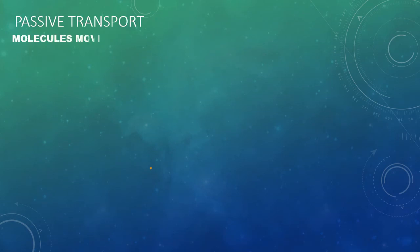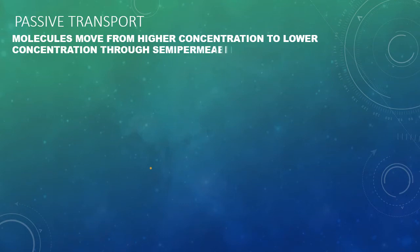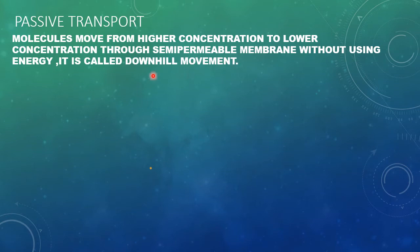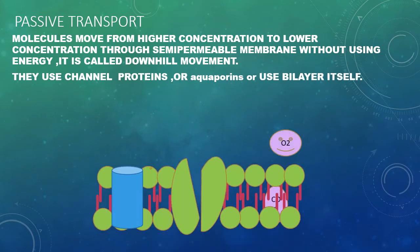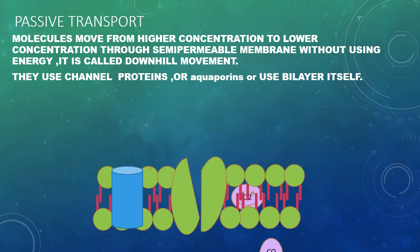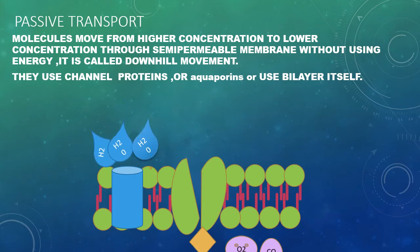In passive transport, molecules move from higher concentration to lower concentration through the semi-permeable membrane — this movement is called downhill movement. Channels, aquaporins, and the bilayer itself are used. Oxygen and carbon dioxide, being uncharged molecules, pass through the bilayer very easily, while ions pass through channels and water molecules pass through aquaporins.